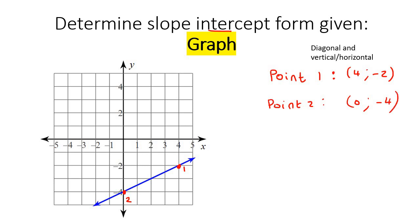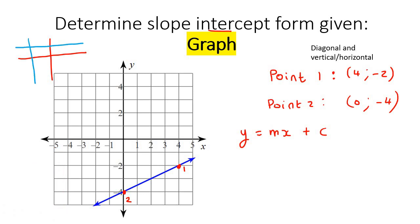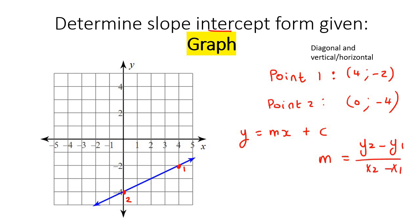Now we can use the same techniques from the previous lesson to find the equation. We know that the equation is y equals mx plus c. To find the slope or gradient, we use the formula: m equals y2 minus y1 over x2 minus x1. Remember that from the previous lesson? It's the same thing now.